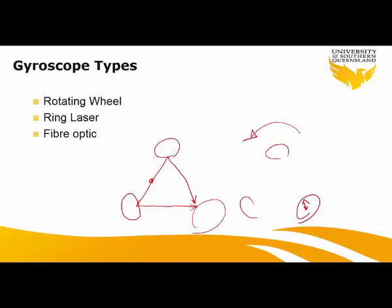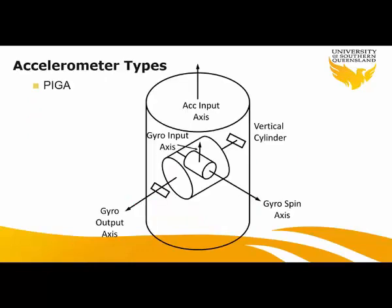The fiber optic gyroscope consists of several kilometers of very thin optical fiber wound around a cylindrical spool. A light source splits its beam in half and sends each half in opposite directions along the fiber. When the fiber is stationary in inertial space, the two beams interfere destructively and no light is detected. If there is a rotation, this destructive interference does not occur, and the light detected at the photo detector is proportional to the rate of rotation.